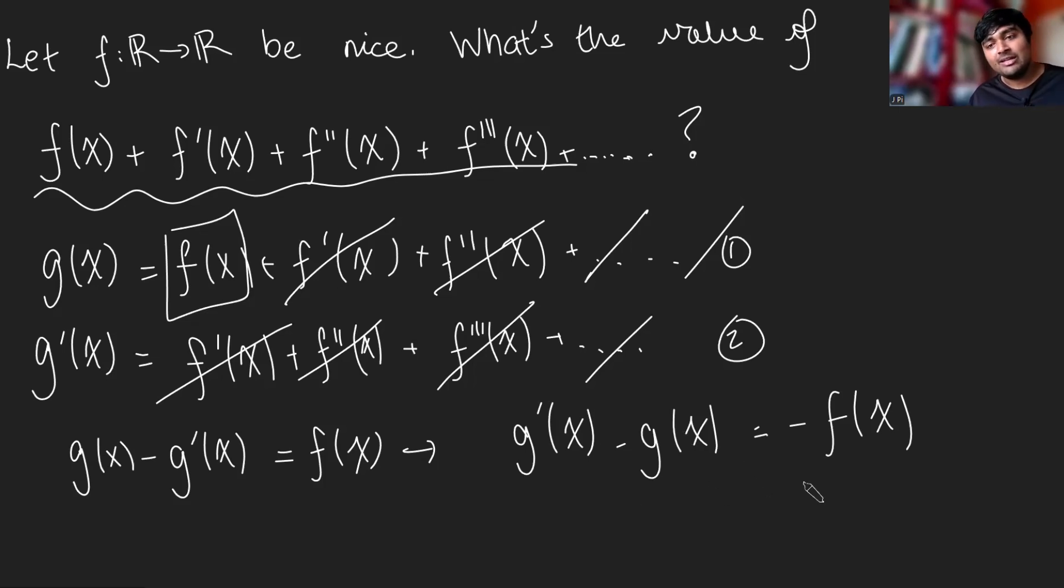But essentially, what we're going to do is multiply both sides here by what's called the integrating factor. And in this case, it's e^(-x). So I'm going to multiply both sides by e^(-x).